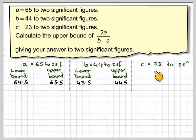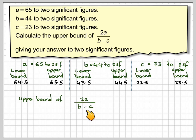And for C, equal to 23 to 2 significant figures, the lower bound is going to be equal to 22.5, and the upper bound is going to be 23.5. We've got to consider the upper bound of 2A divided by B minus C.